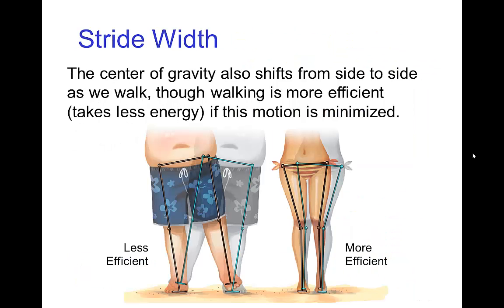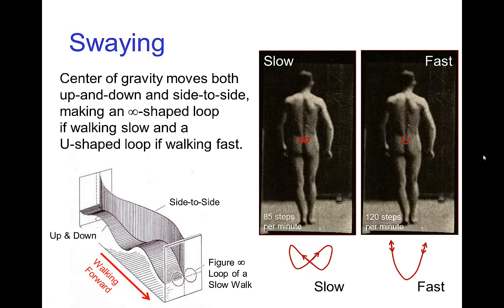Besides the up and down motion of the center of gravity, there's also some side to side motion as we walk. We tend to minimize that because it's less efficient to walk with significant side to side motion — it just takes more energy. Although it's more efficient to minimize that side to side motion, there is still always a bit of it as we walk. This side to side motion is actually synchronized with the up and down motion, but the exact pattern of that synchronization varies depending on whether we are walking slowly or walking quickly.